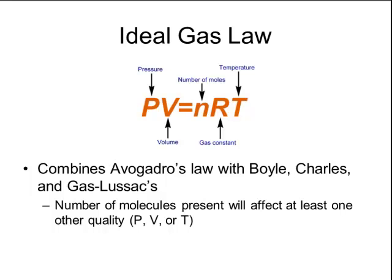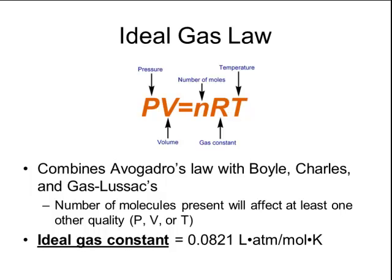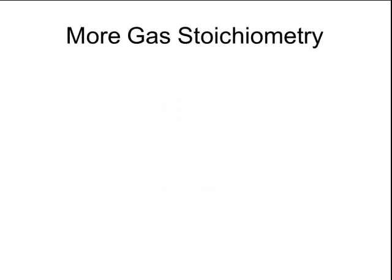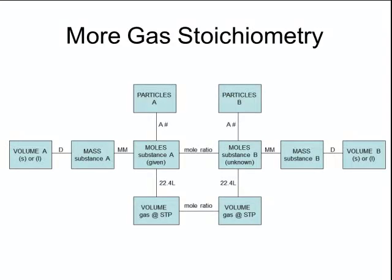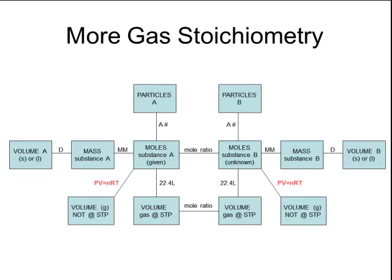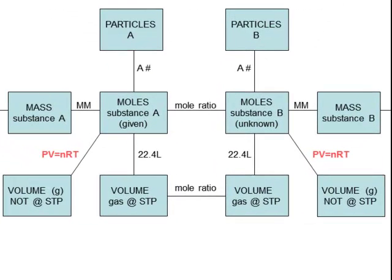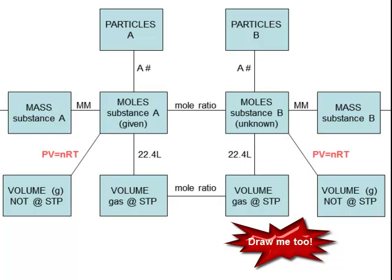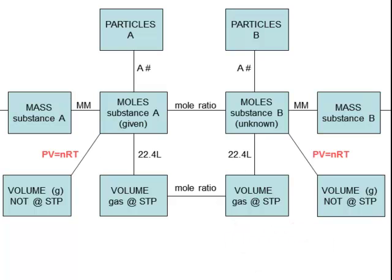The R in the ideal gas law is called the gas constant. The gas constant has several different values depending on what units you use, but when we use the ideal gas law, the most common value to use is 0.0821. Because the ideal gas law does not require conditions to be at standard temperature and pressure, we can also use it to establish relationships between moles. So if we revisit the mole map we just added to — where the volume of gases at STP is at the bottom — we can add two more boxes for the volume of a gas when it's not at STP. When conditions are not at standard temperature and pressure, we can use the ideal gas law to solve for the number of moles, represented by the letter n in the equation.